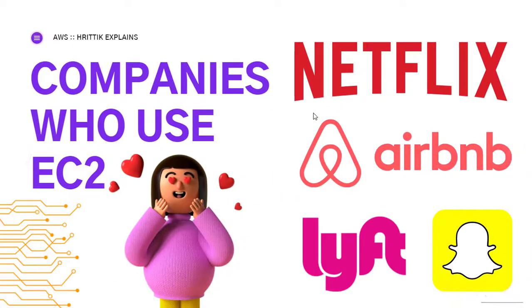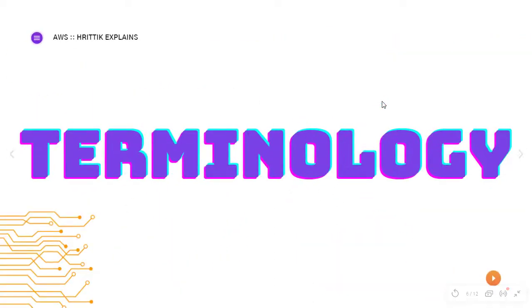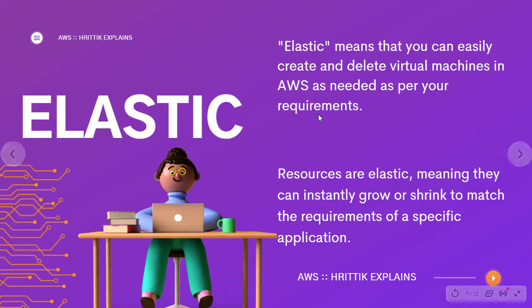Which companies use EC2? A lot of small companies and big names like Netflix, Lyft, Airbnb, and Snapchat use it. Now let's talk about a few terminologies linked with AWS EC2. The first one is elastic — the E in EC2 stands for elastic. Elastic means that you can easily create and delete virtual machines in AWS as per your requirements. Resources are elastic, meaning they can instantly grow or shrink to match the requirements of a specific application.